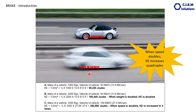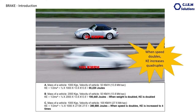Now, if we double the speed instead — keeping the mass at 1,000 kg and increasing velocity to 100 km/h, which is 27.6 meters per second — the kinetic energy becomes 380,880 Joules, which is 4 times the first case. So by increasing speed from 50 to 100 km/h, the kinetic energy increases four times. When speed doubles, kinetic energy quadruples. This is the most important point to remember when talking about brake system design and how speed and weight influence the stopping distance of a vehicle.